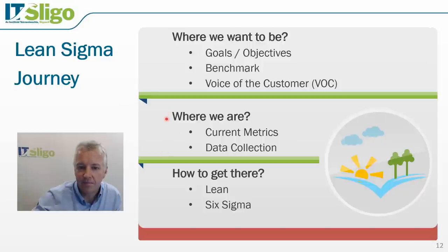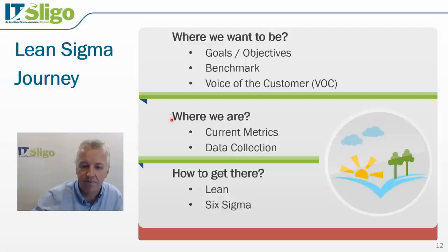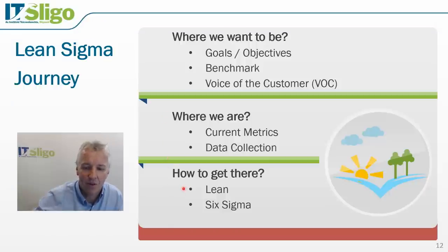Now, where we are seems like a simple question, but a lot of times people don't actually know. They don't have current metrics for their key performance indicators, or KPIs, and they're not collecting the data. For example, if you want to run a marathon next year and someone asks what it currently takes you to run a kilometer or two, you probably don't know — so you need to get some baseline data. And finally, how to get there: we're going to use Lean and Six Sigma tools, which definitely can help.